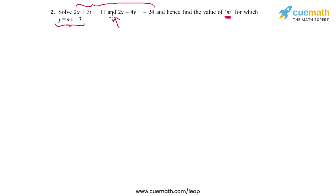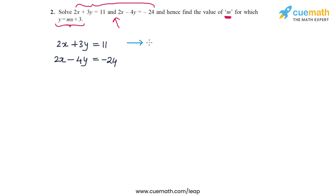So let's start by solving this pair of equations: 2x plus 3y equal to 11 and 2x minus 4y equal to minus 24. From the first equation, we write y in terms of x. We have 3y equal to 11 minus 2x, which means y is equal to (11 minus 2x) divided by 3.